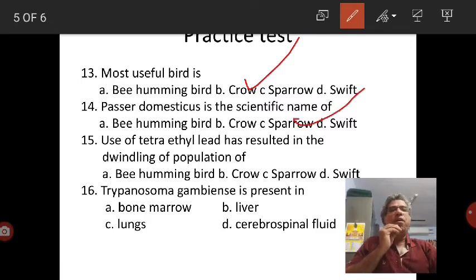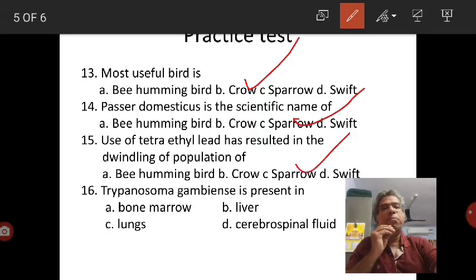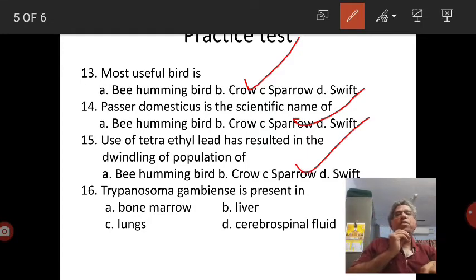Use of tetraethyl lead has resulted in the dwindling population of sparrow. This is very important application oriented bit. Previously, tetraethyl lead is used in petrol as antiknock agent. That is called leaded petrol, and the usage of this leaded petrol combined with tetraethyl lead is responsible for reduction or drastic dwindling of sparrow population. Of course, nowadays lead-free petrol is available.